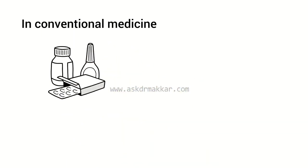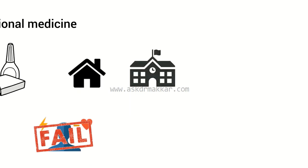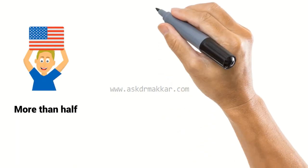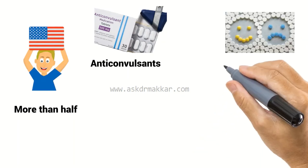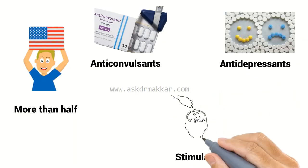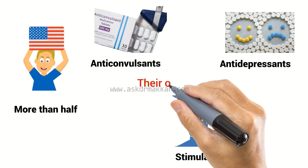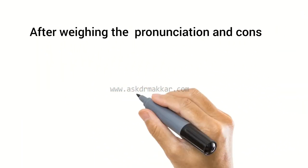In conventional medicine, many medications are used to treat ASD symptoms that interfere with integrating a child into home or school. When behavioral treatment fails, more than half of U.S. children diagnosed with ASD are prescribed psychoactive drugs or anticonvulsants, with the most common drug classes being antidepressants, stimulants, and antipsychotics. All these medicines have their own side effects and should be used only after weighing the pros and cons with a doctor.